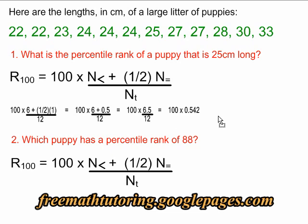And then when we multiply by 100, we get 54.2. But percentile has to be values between 0 and 100. You cannot have a decimal value. So you round.